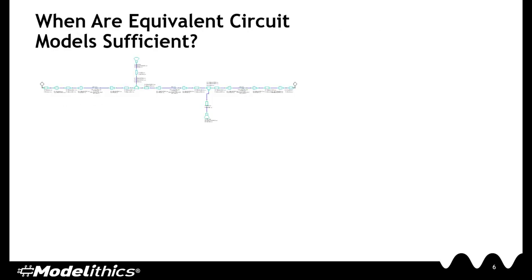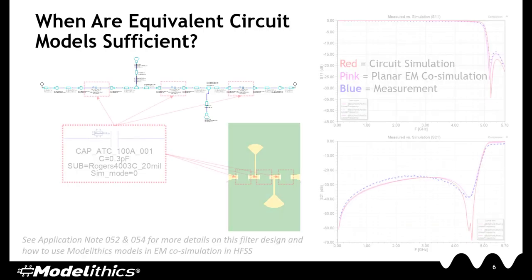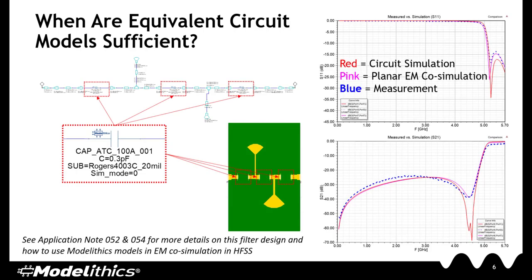Here is an example of a circuit where equivalent circuit models in planar EM co-simulation were able to accurately predict the fabricated circuit performance. Shown here is a 5 GHz elliptic high-pass filter, originally designed using Newhertz Technologies Filter Solutions software. This filter was built on a 20-mil Rogers 4003C substrate and uses a combination of discrete SMD components (capacitors) and distributed elements (radial stubs) to achieve the desired filter response. The measurement data is shown in the dashed blue line. The circuit simulation results are shown in red and provide a reasonably good prediction. However, compare this to the improved results using planar EM co-simulation, shown in magenta — using EM co-simulation, we were better able to capture the out-of-band performance.